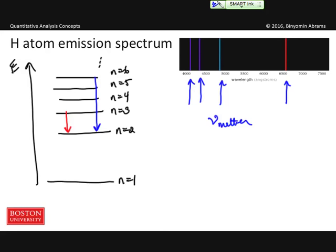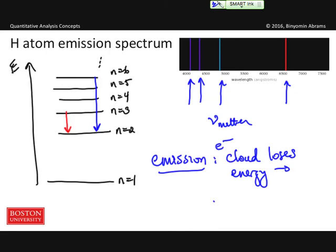In all of these cases, we have emission, because the cloud, the electron cloud, loses energy, thereby releasing light.